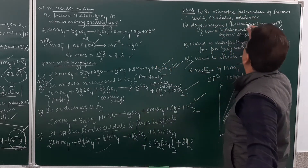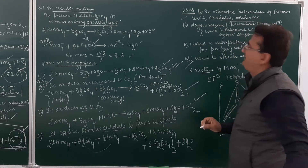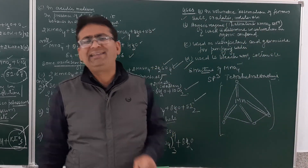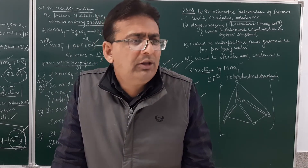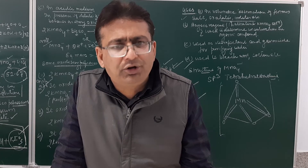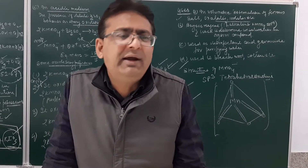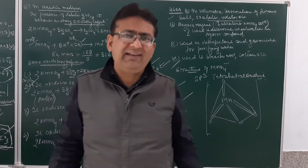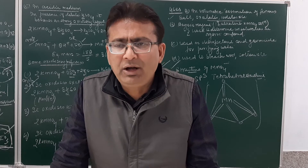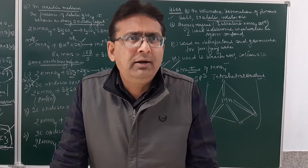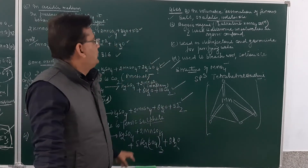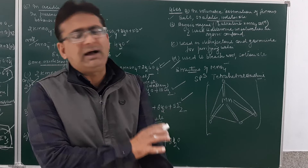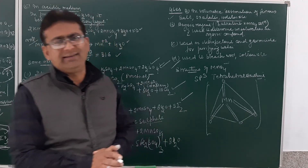Uses of KMnO4: it is used in volumetric estimation of ferrous salts, oxalates, and iodides. In volumetric estimation, acidified conditions are used with dilute sulfuric acid. The question may be asked why dilute HCl or nitric acid is not used — because KMnO4 oxidizes HCl to chlorine, and nitric acid itself is a very strong oxidizing agent. It is also used as Bayer's reagent to determine unsaturation in organic compounds, as it decolorizes the pink color of KMnO4 solution.